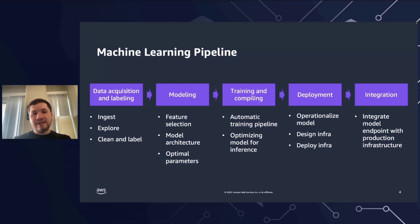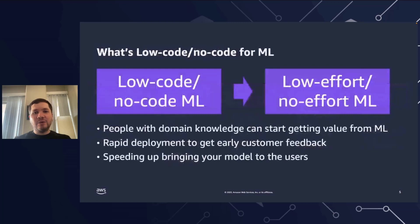You can see there are multiple steps here, and the complexity is not just code. I think 'low-effort, no-effort machine learning' better captures what's happening here — it not only optimizes the code you need to write, it also optimizes the data you need to label and the infrastructure you need to deploy. The value is that people with domain knowledge but without ML expertise can start getting value from ML.